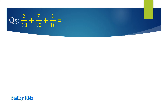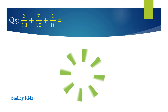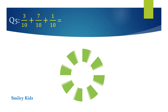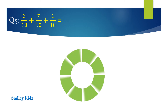Question number 5: 3 by 10 plus 7 by 10 plus 1 by 10 equals dash. Your time starts now. And your time is up.